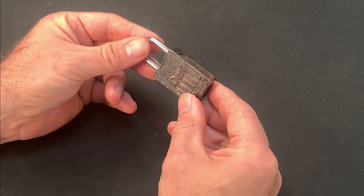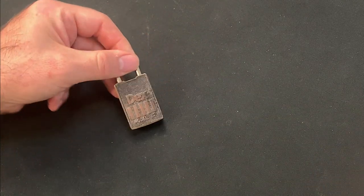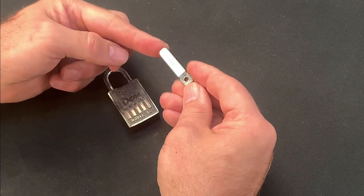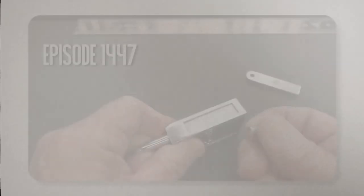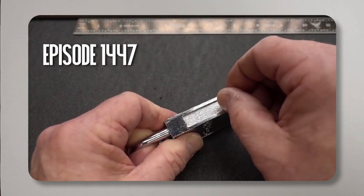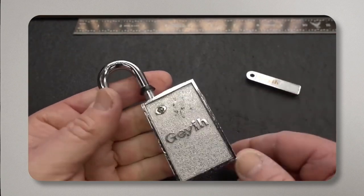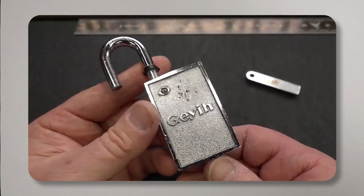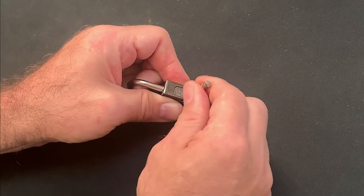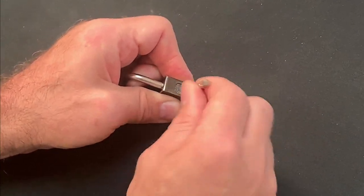I've seen Bosnian Bill and others succeed in a kind of magnetic raking operation by sliding a magnet up and down the keyway whilst pulsing the shackle, but I've not been able to make that work on this particular lock.